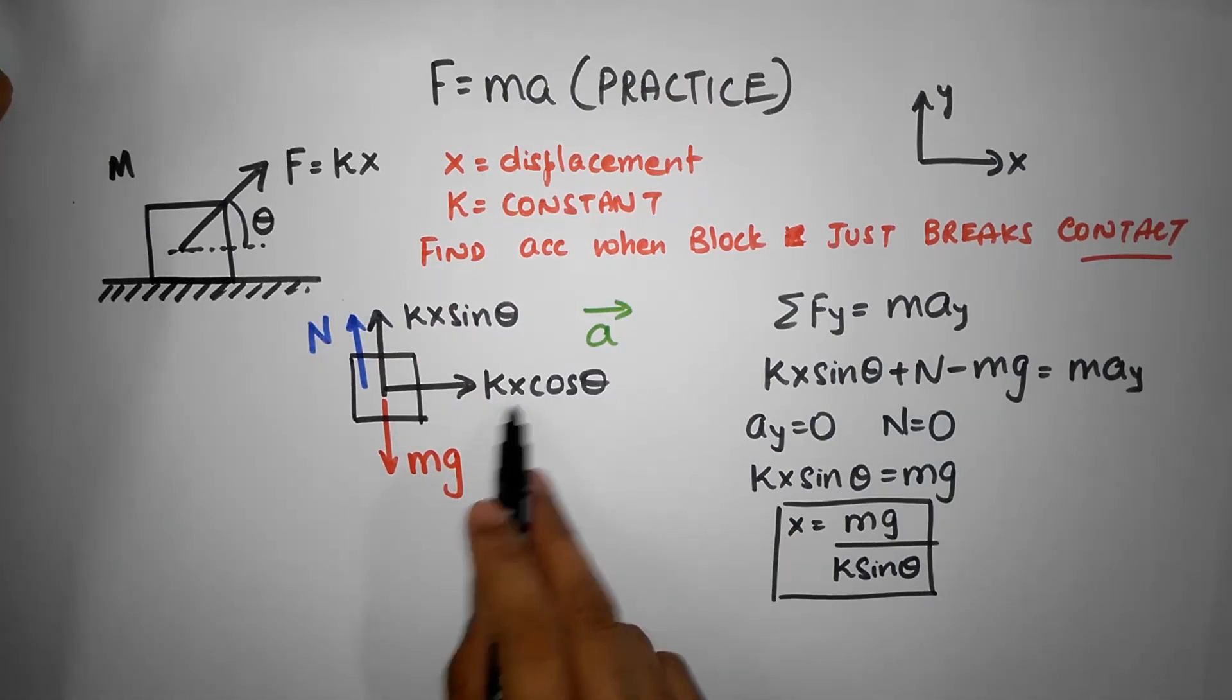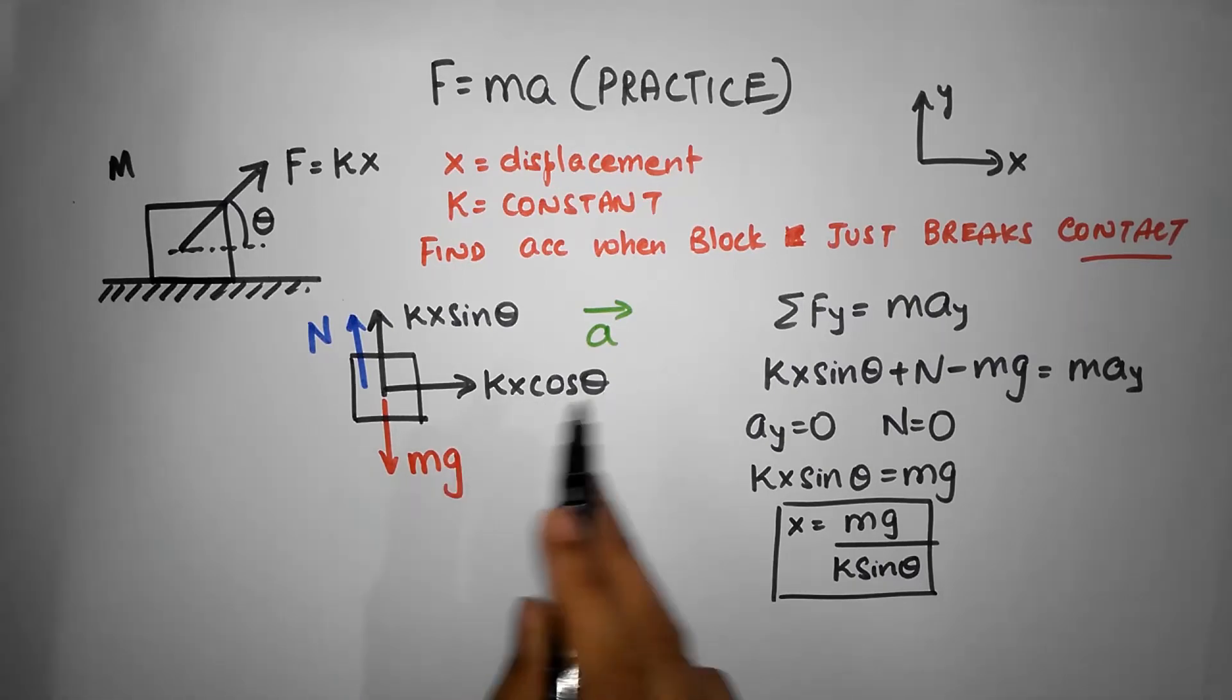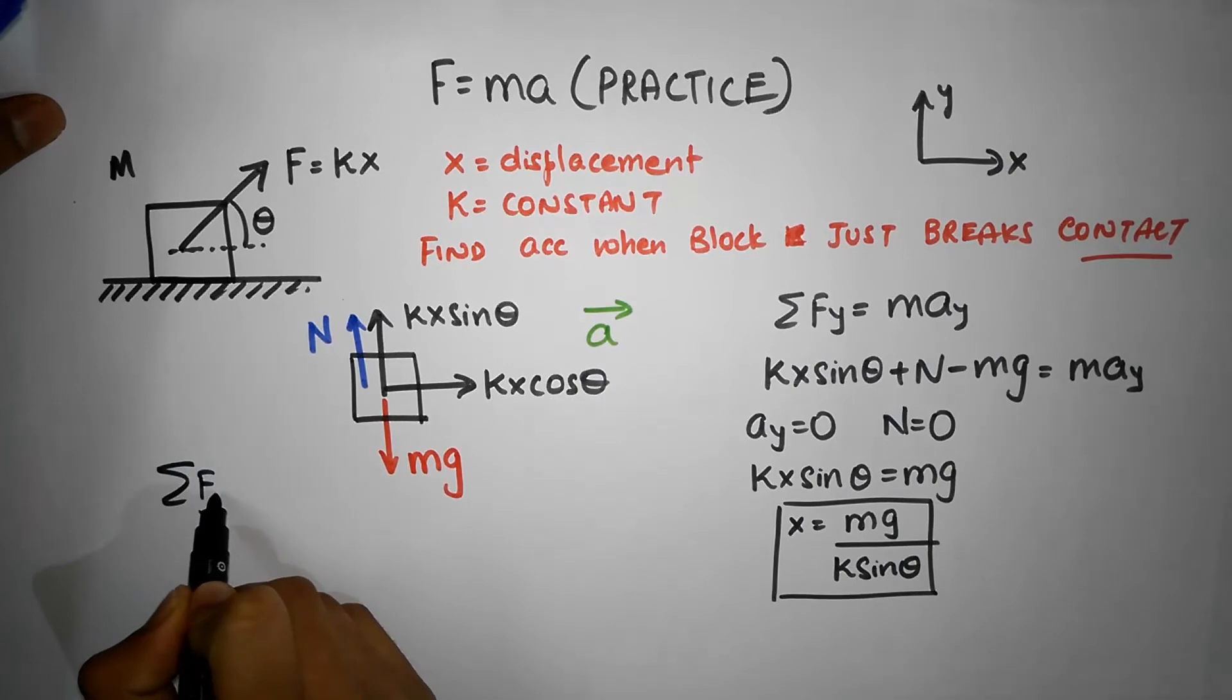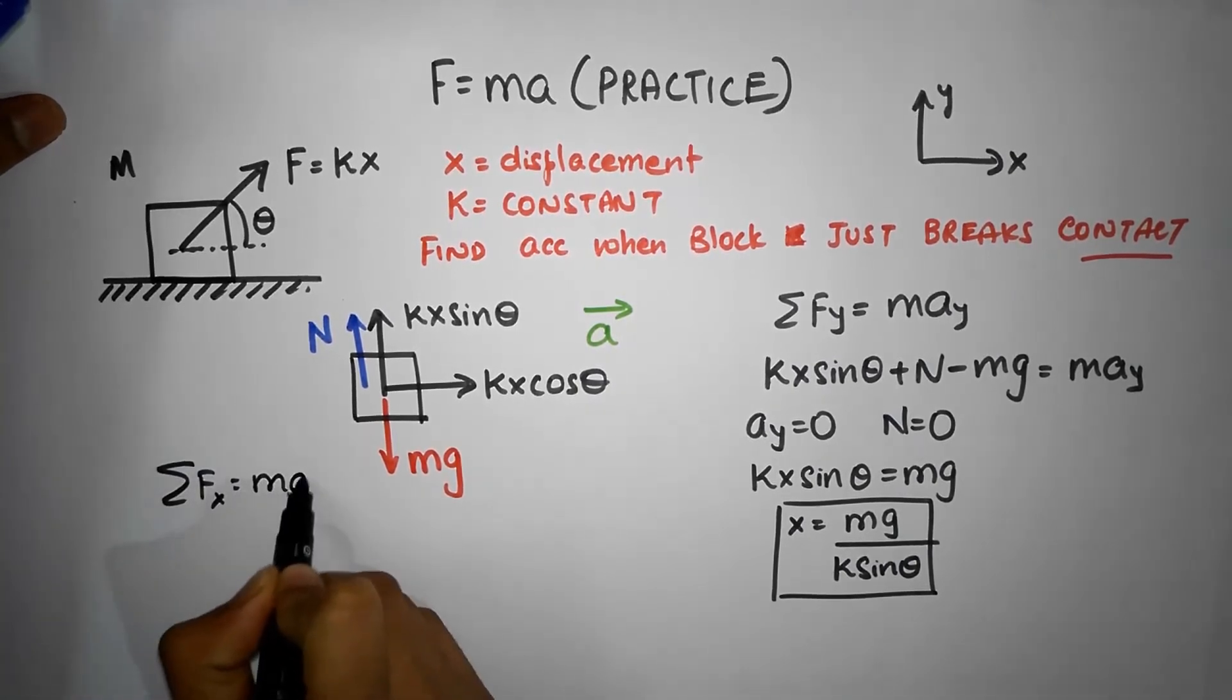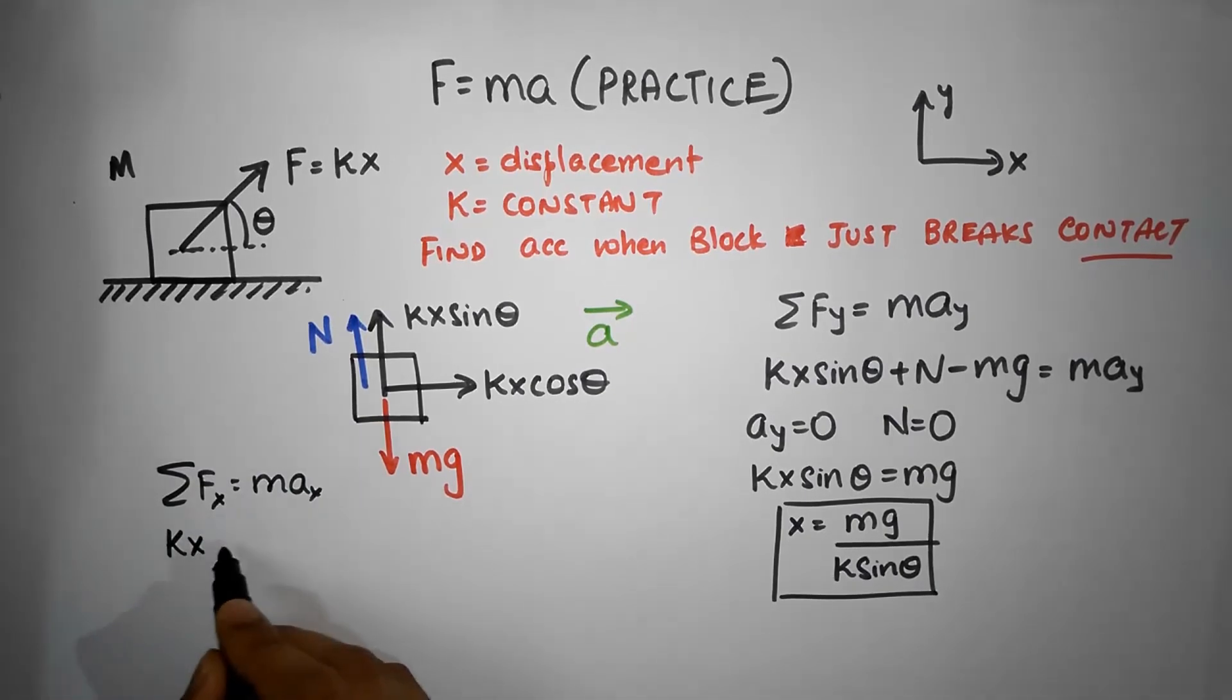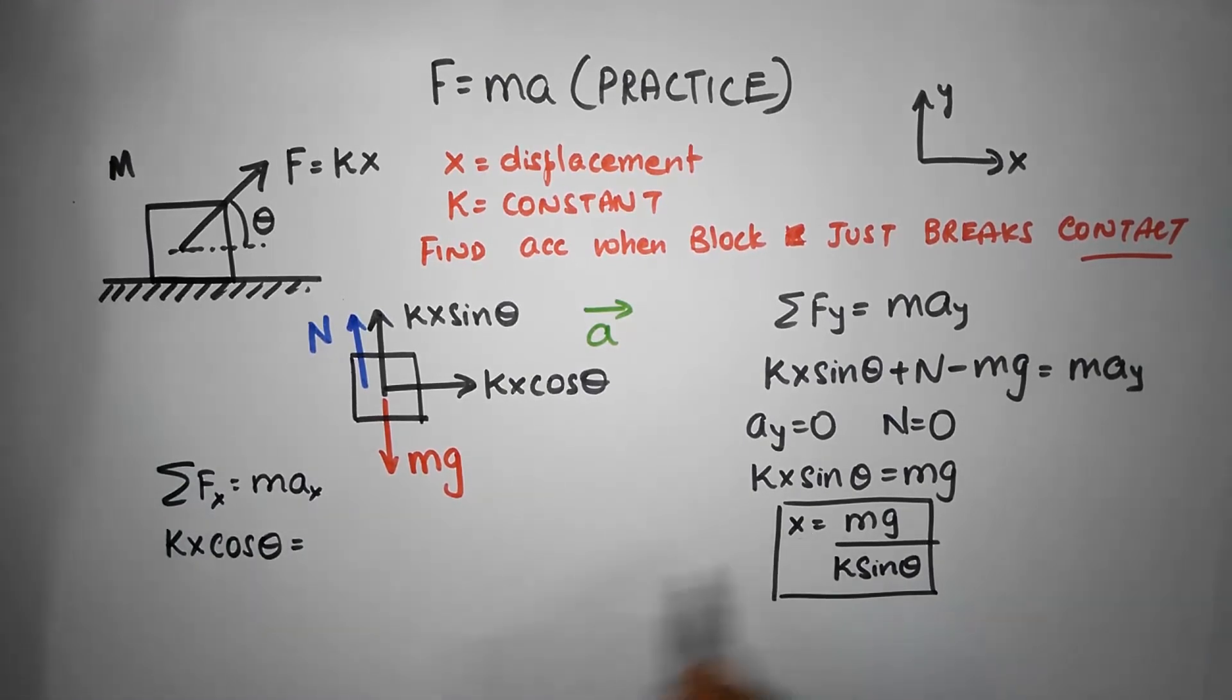Now let's do Sigma F_x equals ma. In the horizontal, there's only one force: kx cos theta. That must equal ma_x. But I now know what x is, so that is k times x, which is mg divided by k sine theta times cos theta, that must equal mass times acceleration along the x direction.